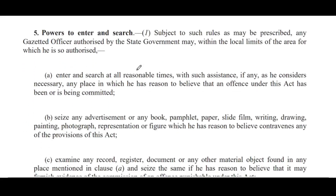Section No. 5: Power to Enter and Search. Subject to such rules as may be prescribed, any gazetted officer authorized by the State Government may, within the local limits of the area for which he is so authorized — (a) enter and search at all reasonable times, with such assistance as he considers necessary, any place in which he has reason to believe that an offense under this Act has been or is being committed; (b) seize any advertisement or any book, pamphlet, paper, slide, film, writing, drawing, painting, photograph, representation or figure which he has reason to believe contravenes any provisions of this Act.